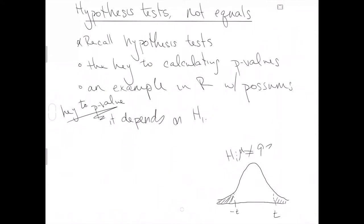That 93 will have context in the example coming up. If we have an alternative hypothesis about a population mean mu not equal to 93, we're going to use the function PT in R, because we're interested in probabilities under the curve, and we'll use the T distribution. When estimating means, we simultaneously have to estimate population standard deviations, and because we have to estimate that extra population parameter, we need to account for the added uncertainty using the T distribution with heavier tails.